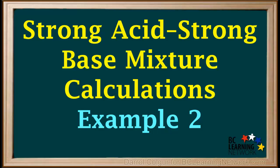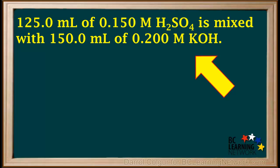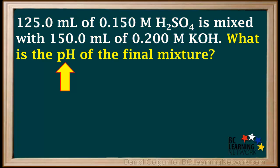Here we'll go over an example in which a strong acid is mixed with a strong base and we calculate the pH of the final mixture. We're given that 125 milliliters of 0.150 molar H2SO4 is mixed with 150 milliliters of 0.200 molar KOH, and we're asked to determine the pH of the final mixture.